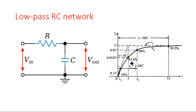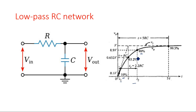When a step input is applied, there are different conditions in the output waveform. There is 10% of the output voltage and 90% of the output voltage, at two different instants T1 and T2. T1 is the instant where we have 10% of the maximum output voltage, and T2 is the instant where we have 90% of the maximum voltage. The charging and discharging — whether it is a low pass or high pass filter — is completely due to the capacitor.